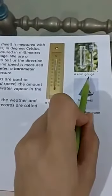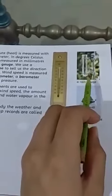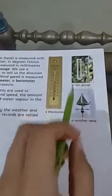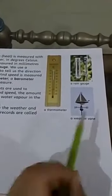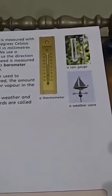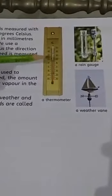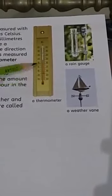Look at this picture — you can see a rain gauge, which is used to measure rainfall in millimeters. This is a weather vane, which tells us about the direction of the wind. A thermometer is used to measure temperature in degrees Celsius.